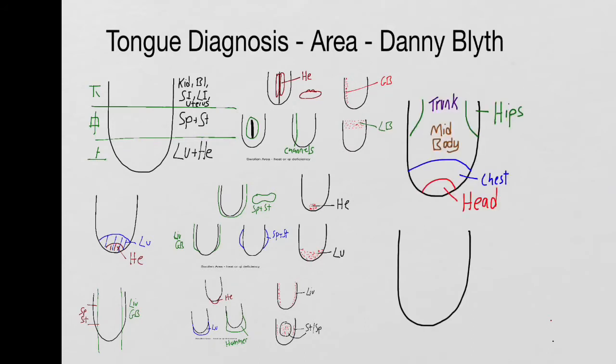Finally, because I'm running out of space, if you get purple areas or purple spots on the tongue, they can tell you about blood stagnation, trauma, or old injury. So around the front is the head, the shoulders, the chest either on the sides or anywhere in this front area. The middle of the tongue is the mid-body, and the lower part of the tongue is the trunk, with the sides of the root being the hips.